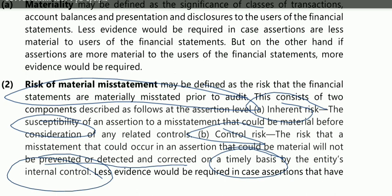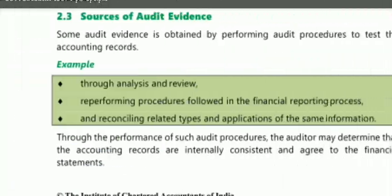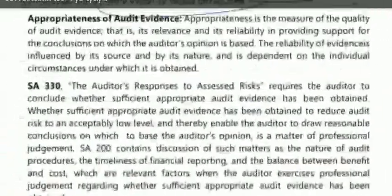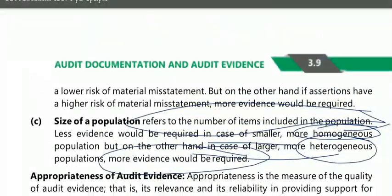Less evidence would be required in case assertions have a lower risk of material misstatement. But on the other hand, if assertions have a higher risk of material misstatement, more evidence would be required.